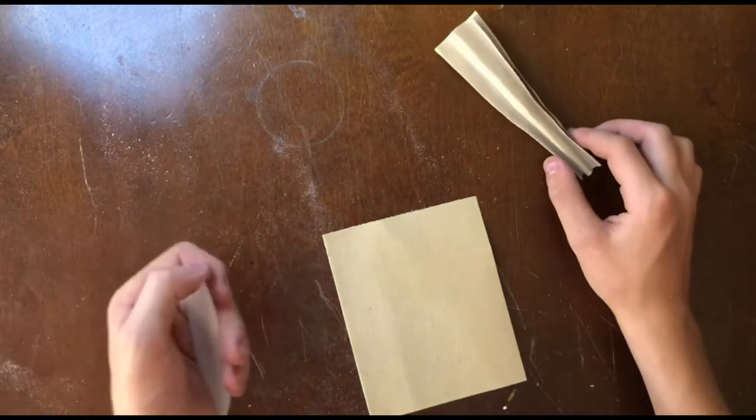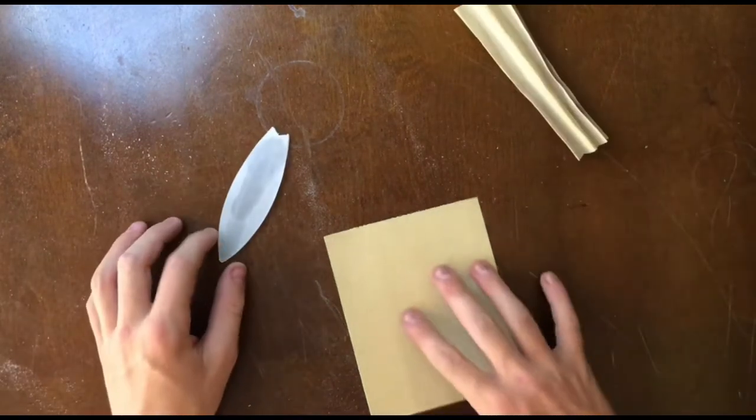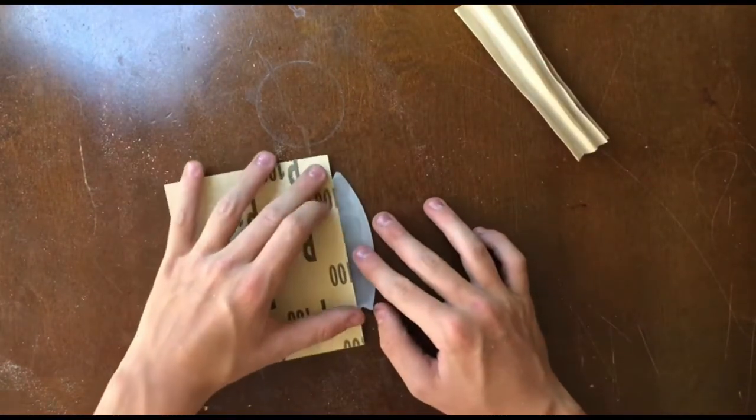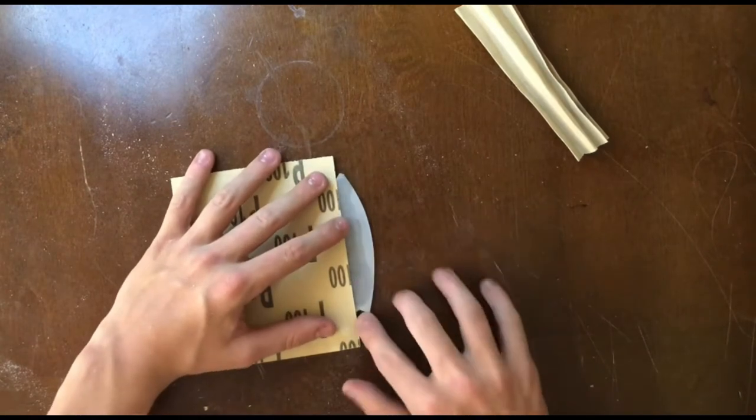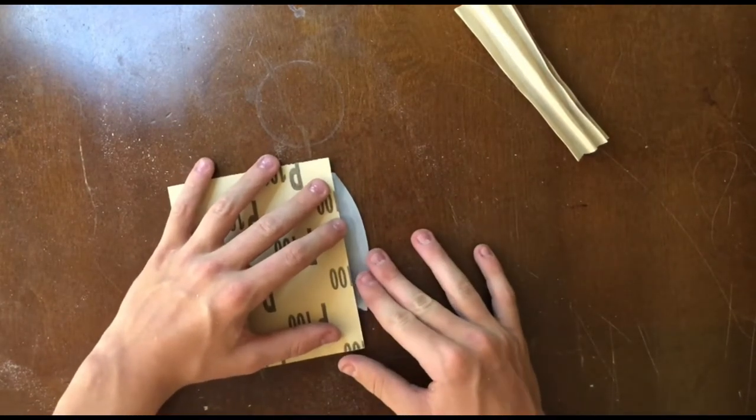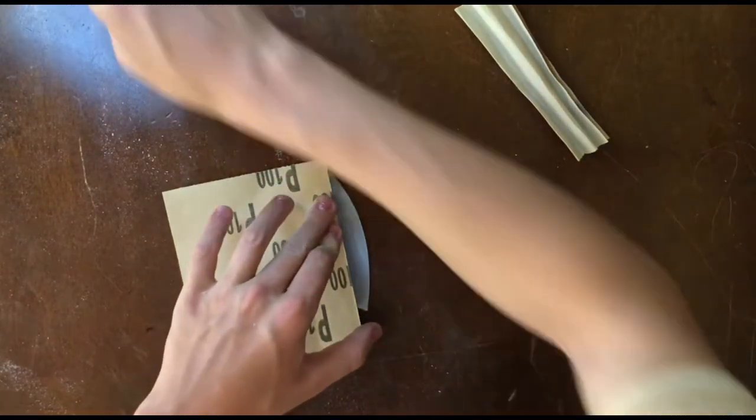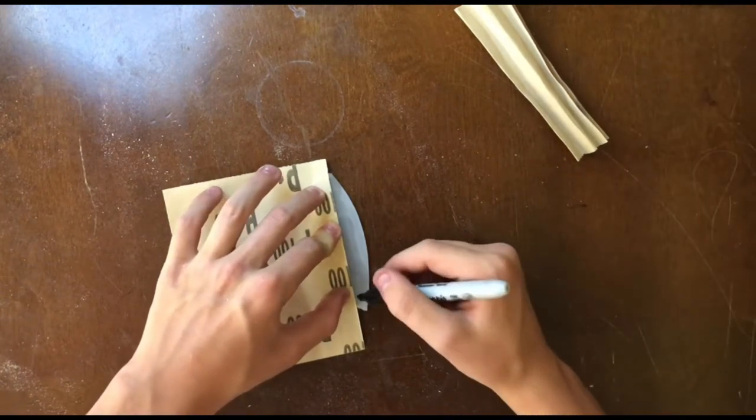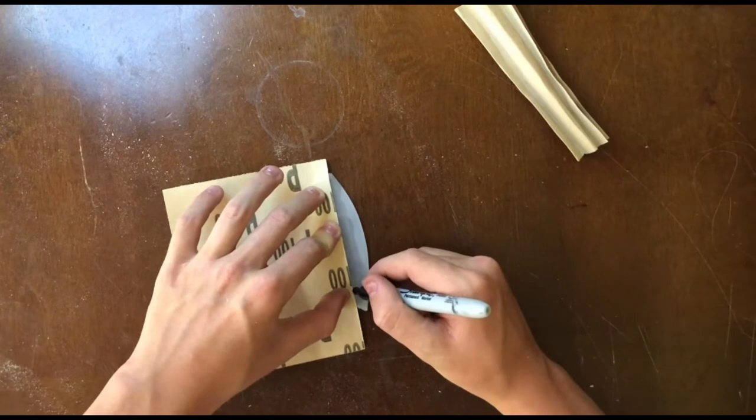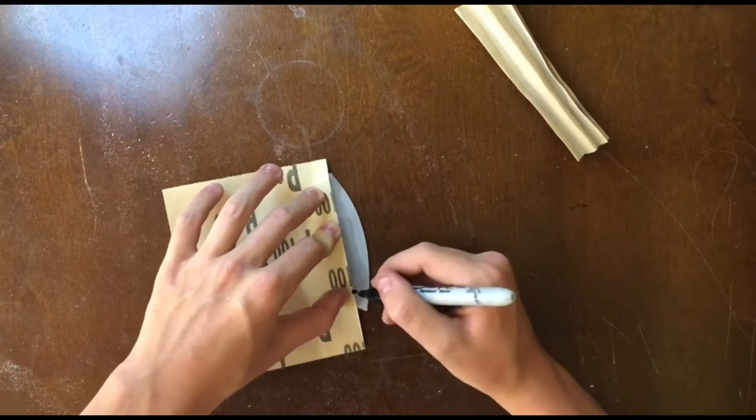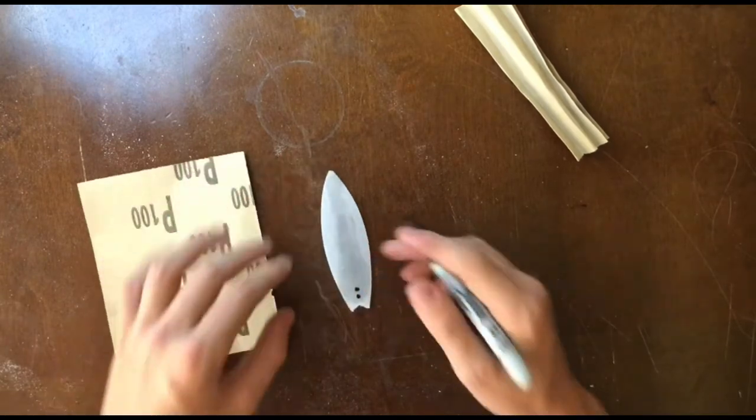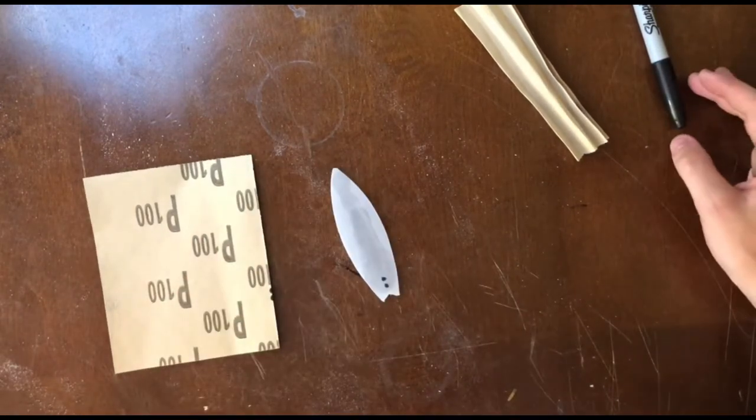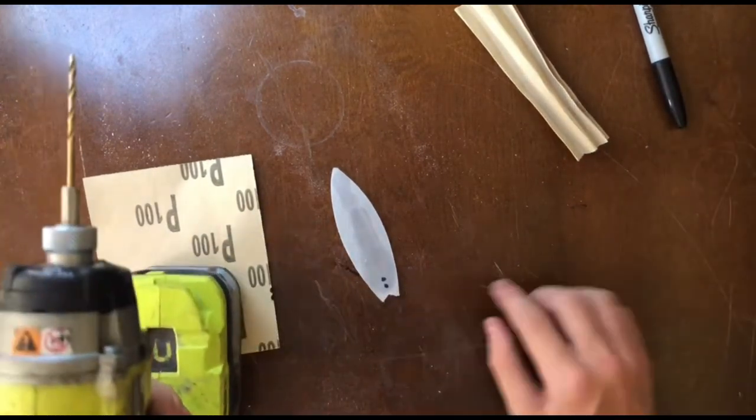Now that we have this all sanded and smooth, we are going to take a straight edge. And we are going to line it up with the point and the point at the tail. And then you're just going to make two dots right at the tail. And then you're going to take a drill and drill those two holes out.